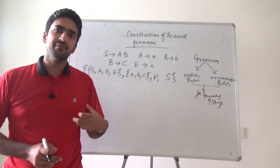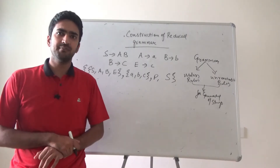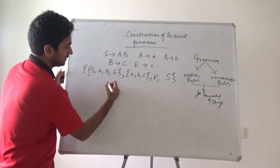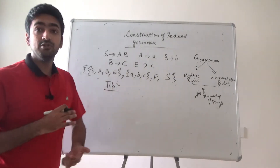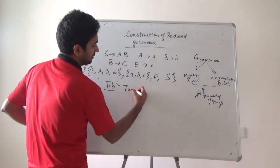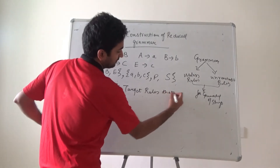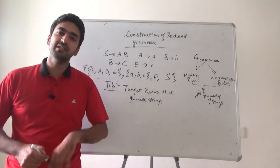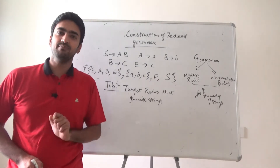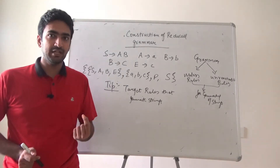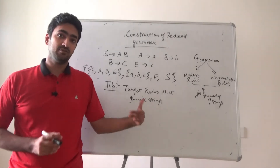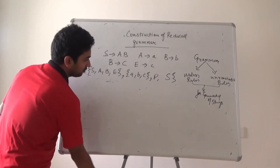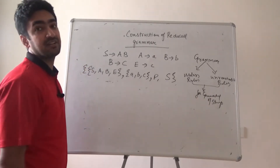Now, what kind of rules are useful? That we will be discussing in the reduced grammar part. If I want to generate strings, there is one tip I would like to give you: if I want to generate a reduced grammar, I will target rules that generate strings. The rules that are directly generating terminals are the very important rules, and we have to target those particular rules.